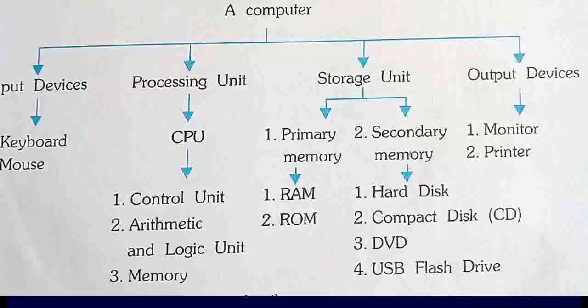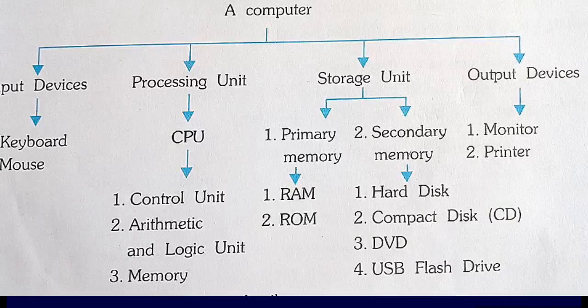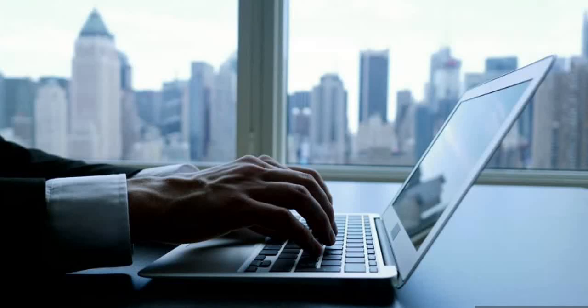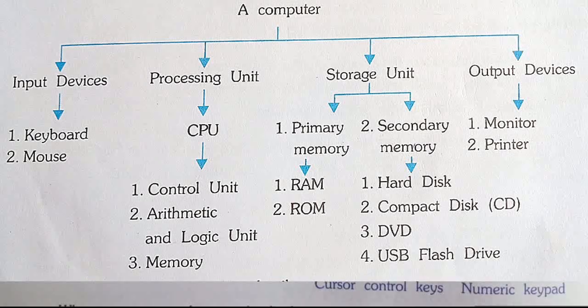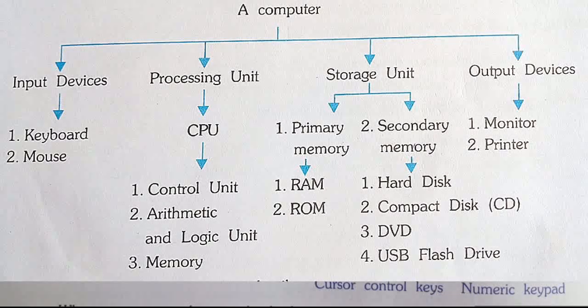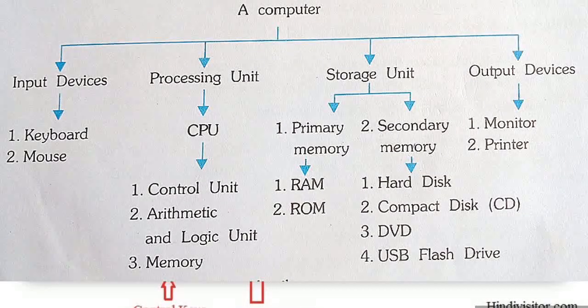In the last video we discussed the meaning of computer, computer languages, types of a computer and components of a computer. In this video we learn about the components of a computer in detail. Look at the picture — a computer is an electronic machine made up of devices or components used for input, processing, storage and output.